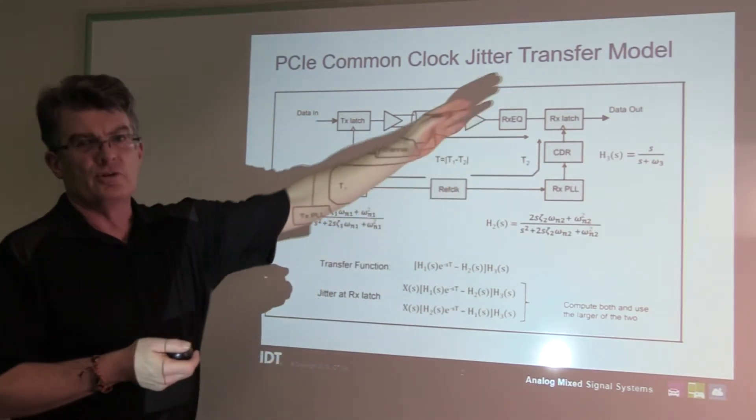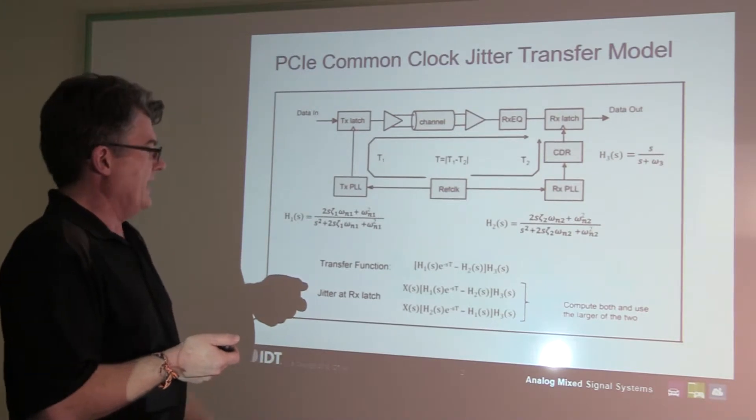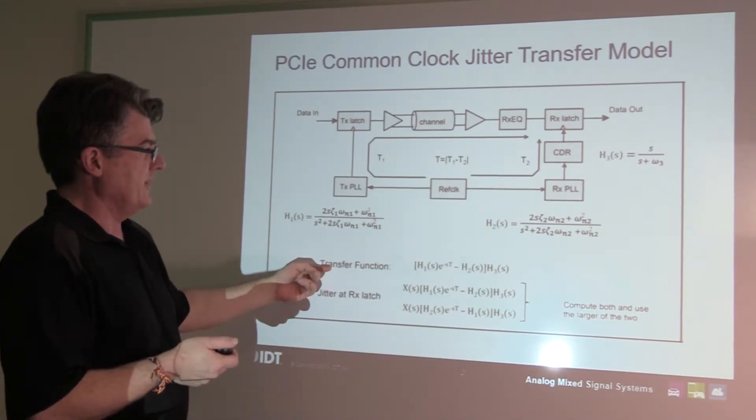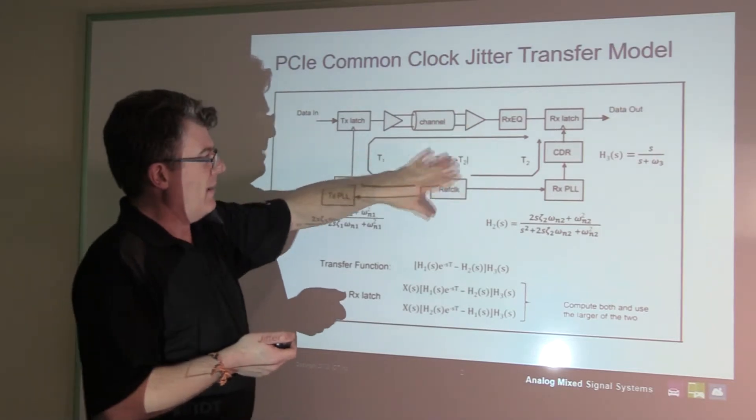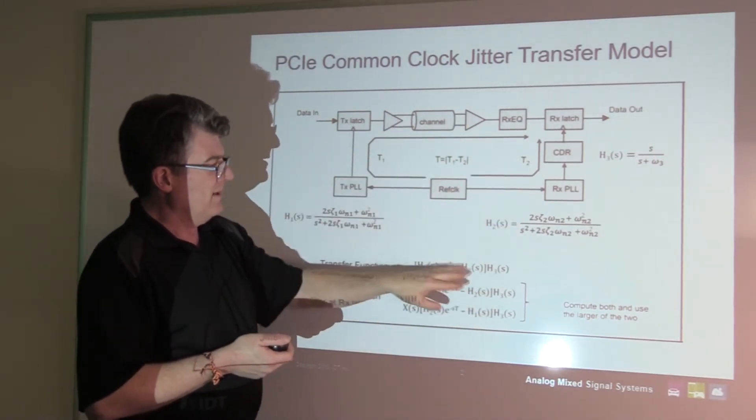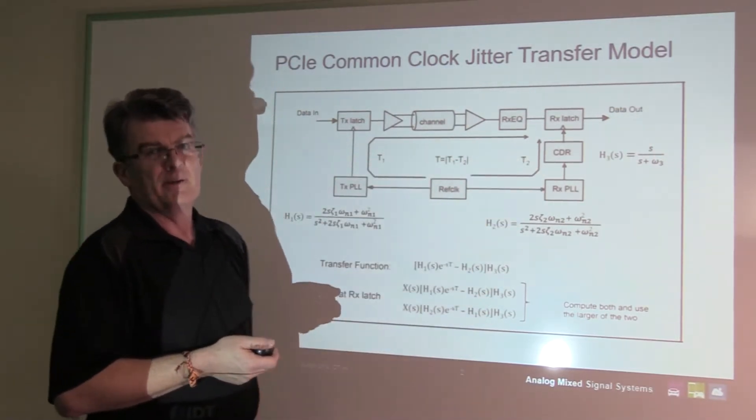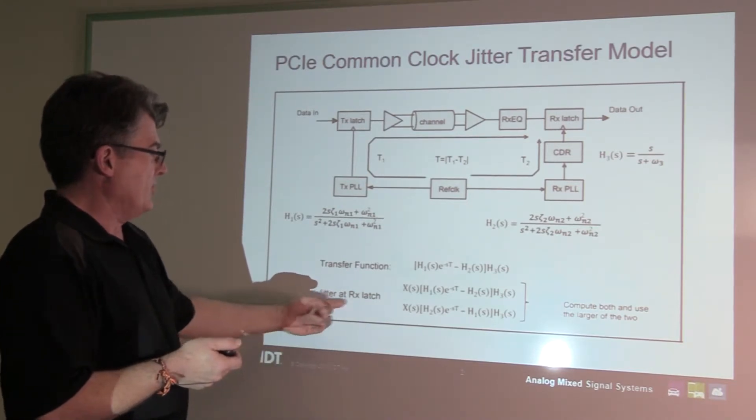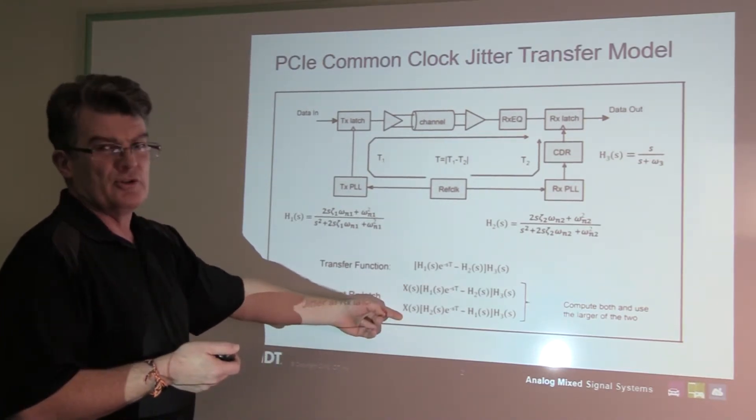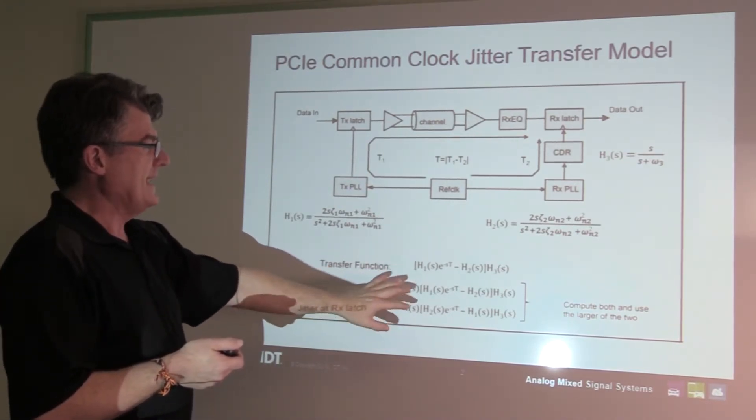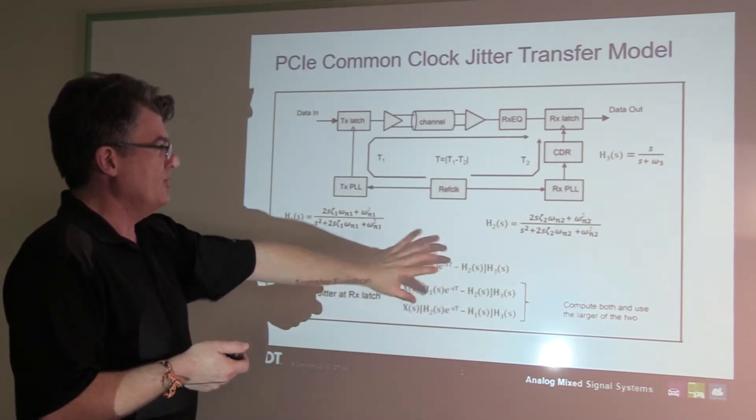So we have h1, h2, and h3, and the transfer function is given by h1 minus h2 convolved with h3. So you can do the calculations for the jitter transfer function at the latch here.